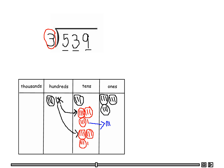So we have one, two, three, four, five, six, seven, eight, nine, ten. We can make three groups of three — one, two, three — with one left over. Let's do the same with the other leftover ten: one ten equals ten ones, so let's make three groups from those ten: one, two, three, four, five, six, seven, eight, nine, and ten.